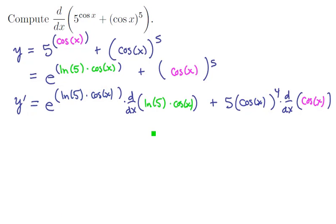Now let's focus on this derivative right here. Notice that it's not the product rule because ln of 5 is a constant. So it's just going to come along for the ride. And the derivative of cos of x is minus sin of x. So now we've got this first term completely differentiated.